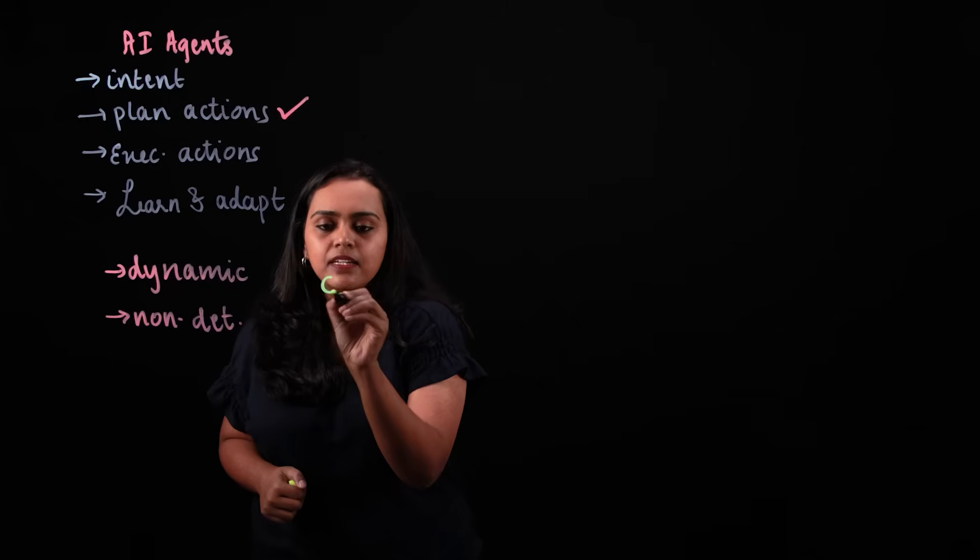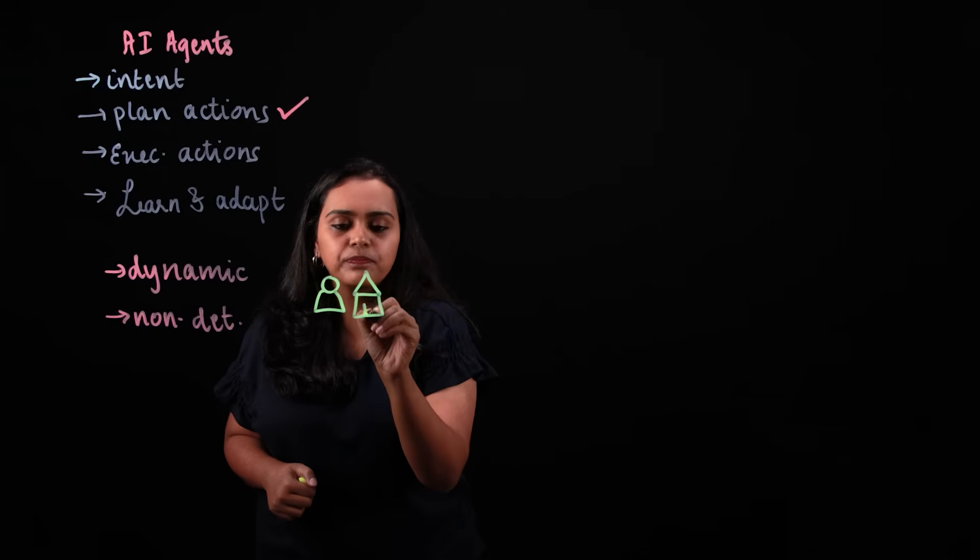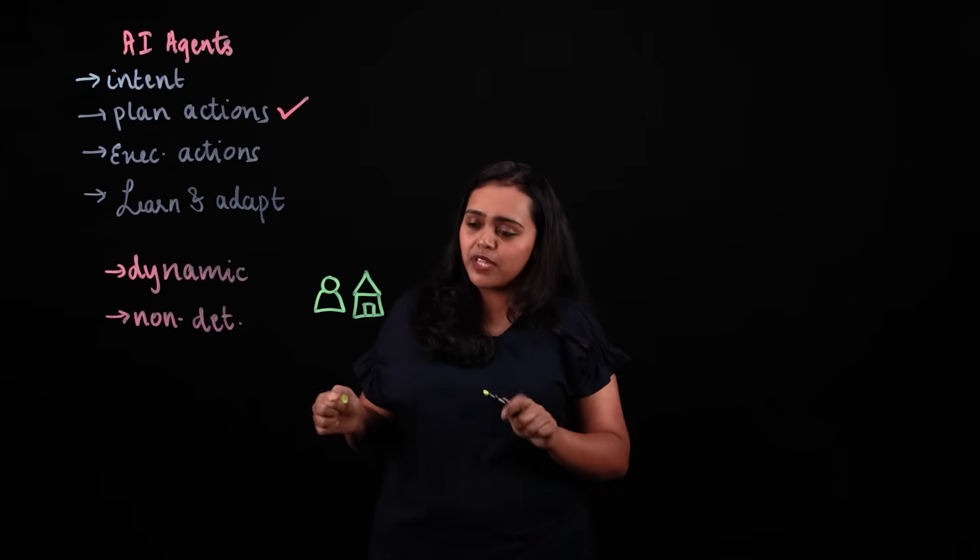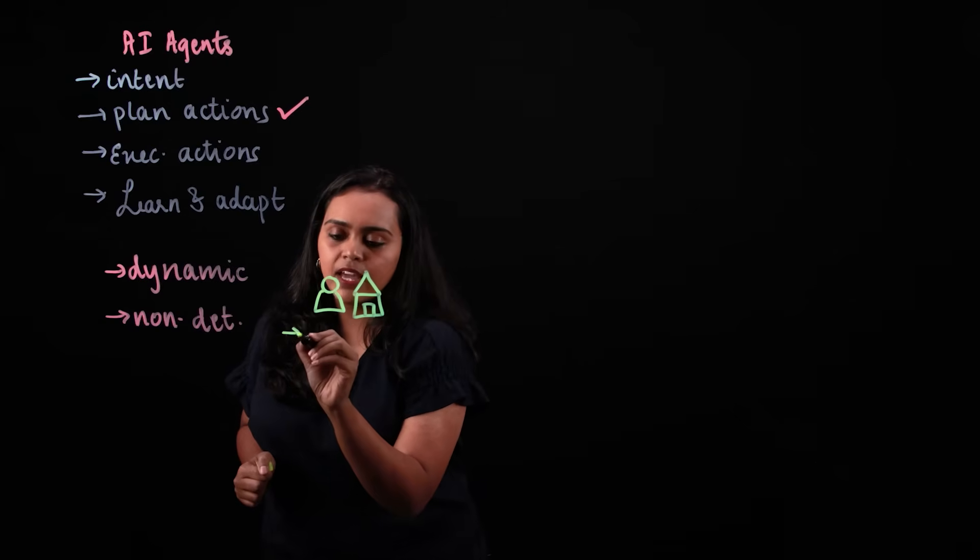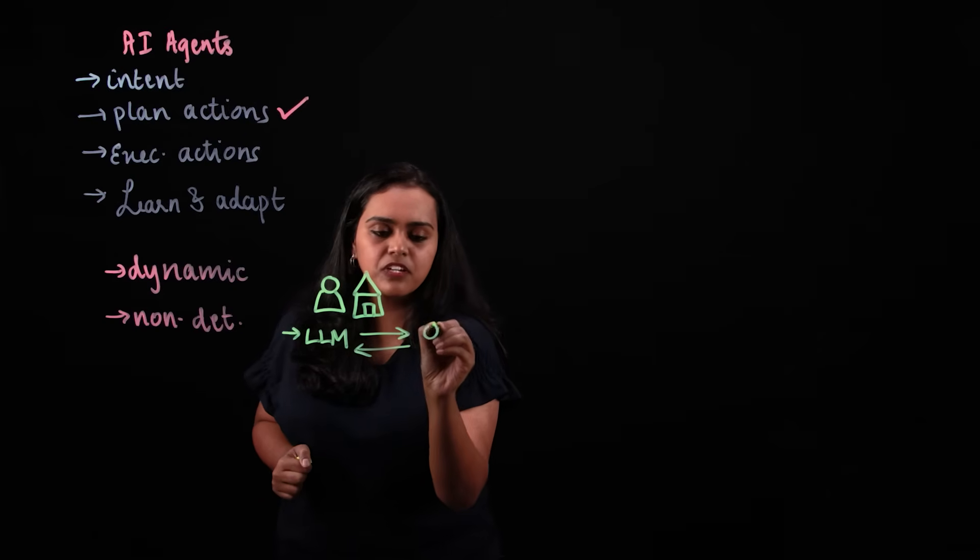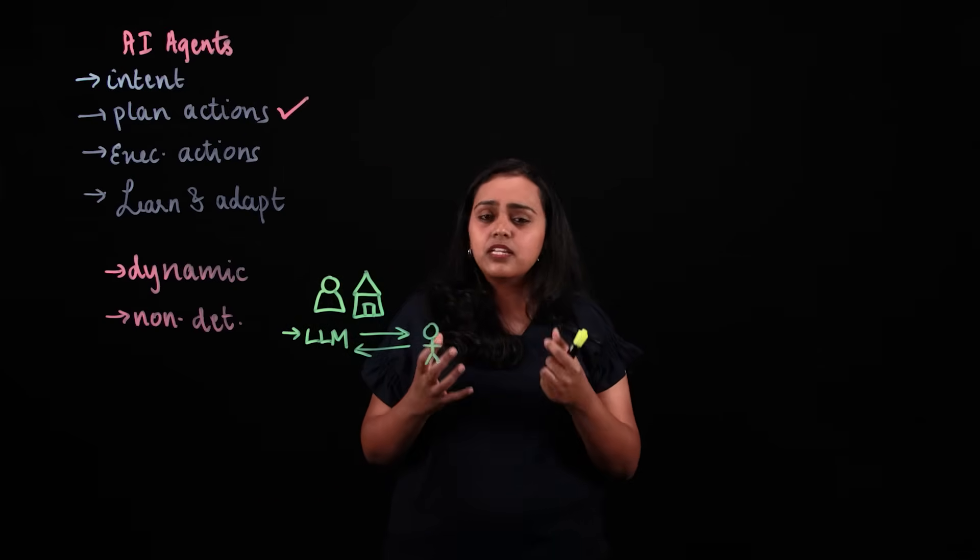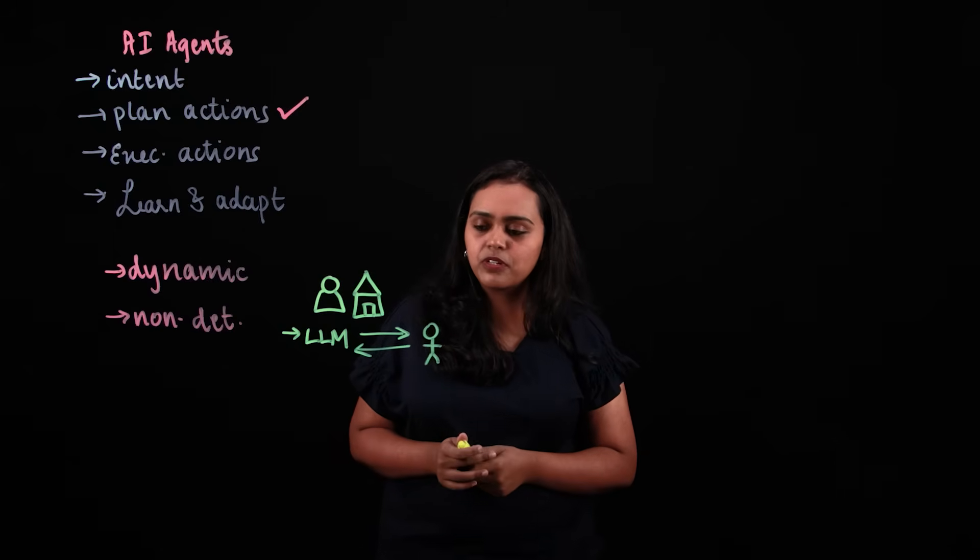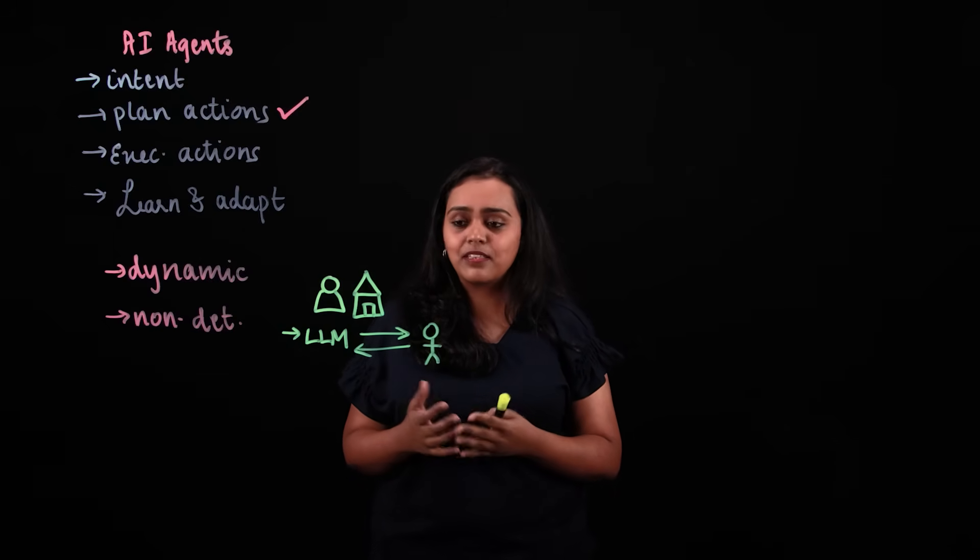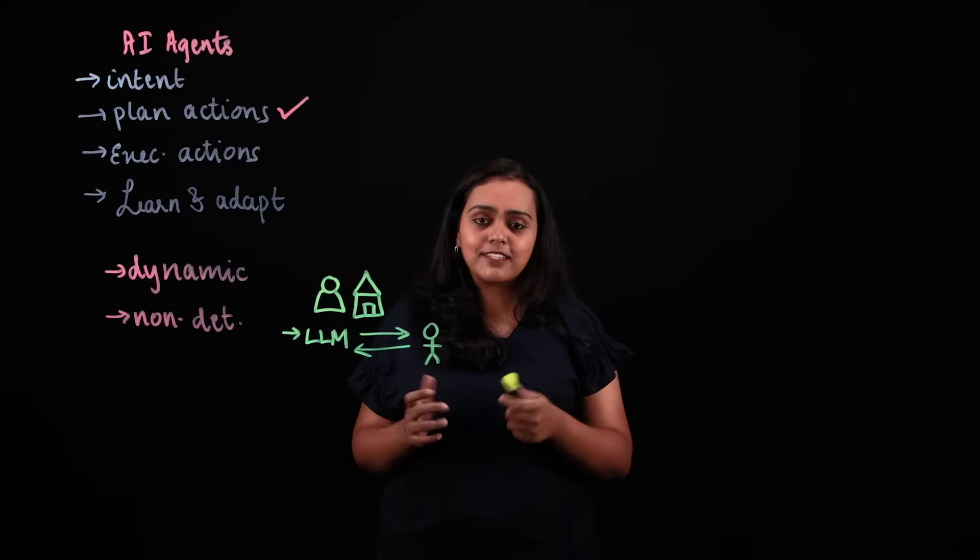Let's say you are building an AI agent that helps customers find their dream home. One way to do that is by having an LLM-based component that has back and forth interactions with the customers. This component is responsible for extracting key pieces of information from the customer, like what is the square footage they're looking for, what are the beds and baths they prefer, what is the locality they're looking for, and things like that.